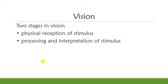Now we will be talking about vision, since vision is how we communicate with our environment. Human vision is a highly complex activity with a wide range of physical and perceptual limitations, yet it is the primary source of information for the average person. Vision occurs in two stages: the first is the physical reception of the stimulus, and the second is the processing and interpretation of the stimulus.